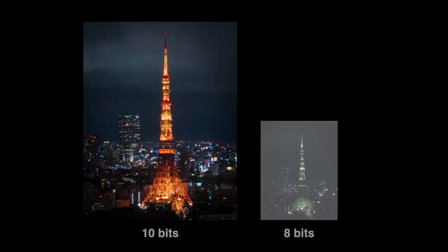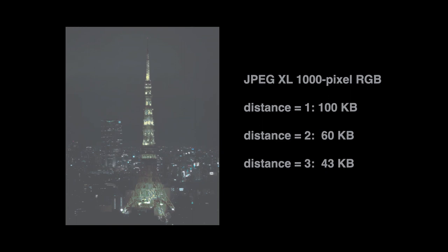Gain maps can have a different bit depth than the main image. For example, in a HEIF or AVIF file, the main image could be 10 bits per component, but the gain map might be only 8 bits. Gain maps probably should be compressed to save space, but they don't have to use the same compression settings as the base image.